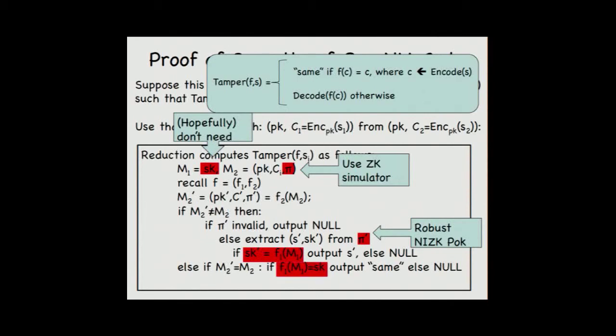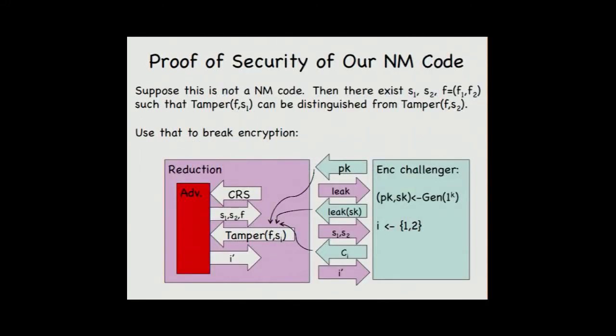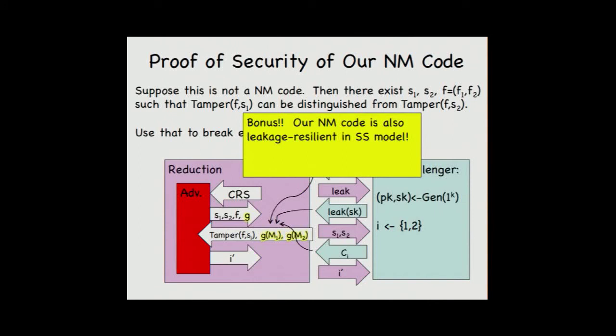This piece of information the reduction does not know. And on the other branch, if F2 doesn't change anything, we need to consider the case. If F2 changes M1, then the experiment should be same. Otherwise it should be null. The high-level information here I want to say is there is some information that reduction cannot compute. And we need to use leakage query here. The reduction needs to query some leakage in order to help him to figure out which case it is. I don't have time to explain which leakage query the reduction needs to make. However, this is a little bit tricky.